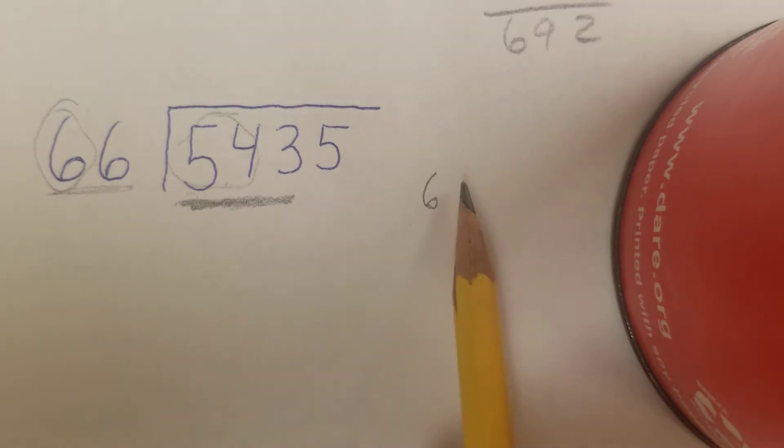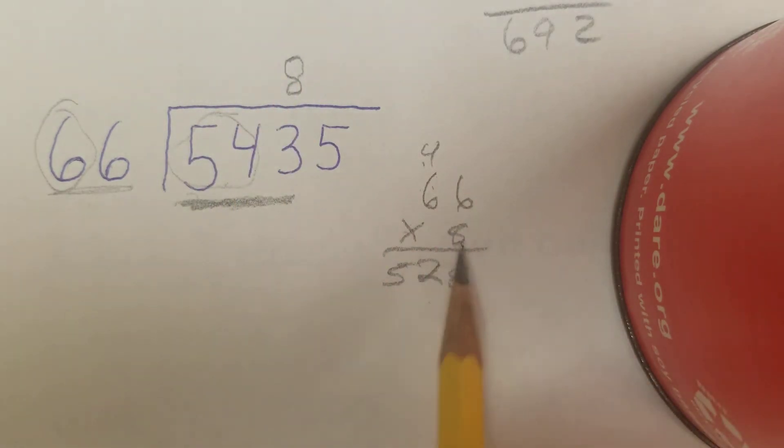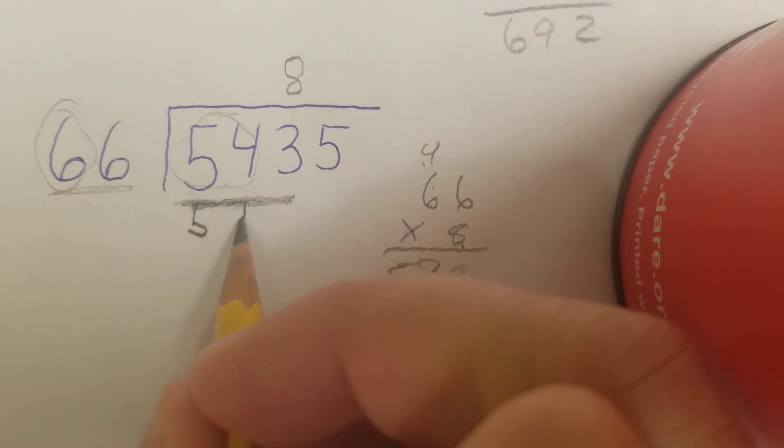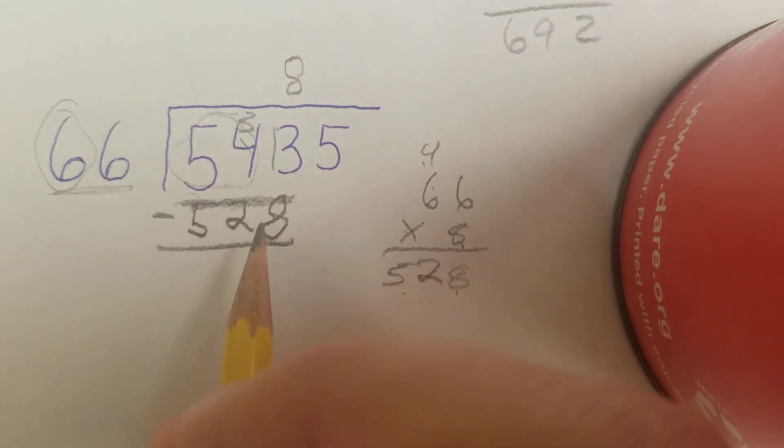Off to the side, I'm going to see what 66 times 8 is. 8 times 6 is 48. 8 times 6 is 48 plus 4 is 52. So it's 528. I'm going to put my 8 up there. 8 times 66 is 528, so I'm going to write 528 below. I'm going to subtract. I have to regroup. 13 minus 8 is 5. 3 minus 2 is 1. 5 minus 5 is 0.